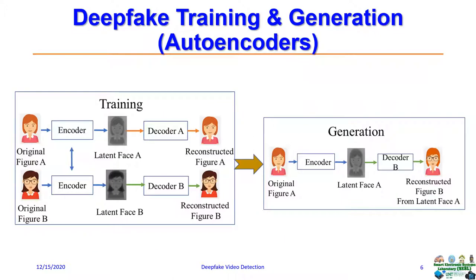So how are deepfake videos created? They can be created by variational autoencoder and generative adversarial network, or GAN. Let's discuss the first one. Creating a deepfake video with autoencoders has two parts: training and generation. An autoencoder is a combination of an encoder and a decoder. When an image is given to an encoder, a latent face representation is created, and that latent face is then fed into a decoder which reconstructs the face again.